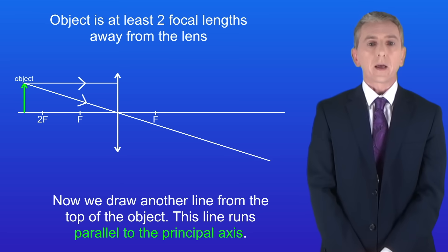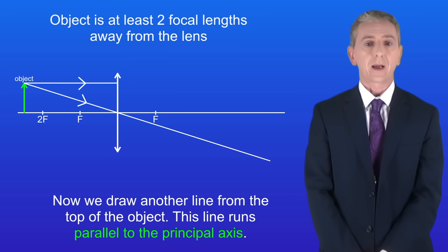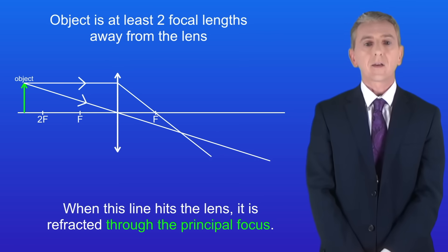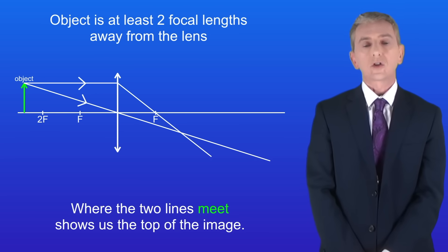Now we draw another line from the top of the object. This line runs parallel to the principal axis. When this line hits the lens it's refracted through the principal focus. Where the two lines meet shows us the top of the image and here it is.